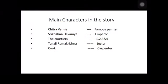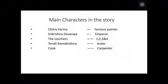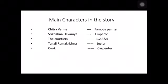The main characters in the story are: Chitravarma, who is a famous painter of the kingdom; and Sri Krishnadevaraya, who is the emperor of Vijayanagara. And there are some courtiers. How do you pronounce C-O-U-R-T-I-E-R-S? You should not say 'courtiers' — it is 'courtiers'; both the O's are silent.